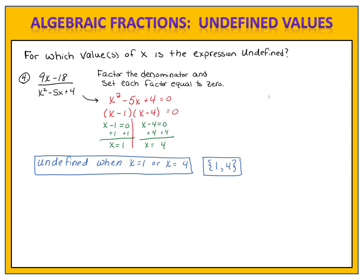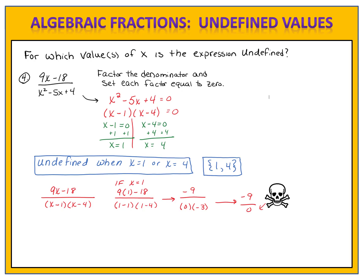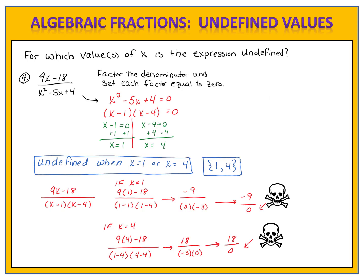Remember what these two values mean — they cause the original fraction to be undefined, giving us division by zero. If I look at the original problem, 9x minus 18 over x squared minus 5x plus 4, and substitute 1 and then 4 in, notice what happens. In the first case we end up with a zero in the denominator — negative 9 over zero — which is not allowed. If x is 4, something similar happens: we end up with 18 over zero. There's danger in the denominator; we can never divide by zero. Therefore the excluded values are 1 and 4.